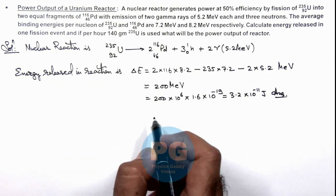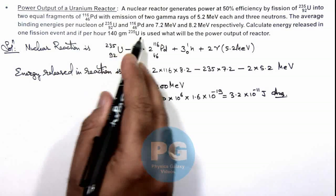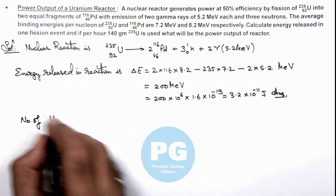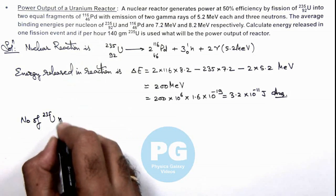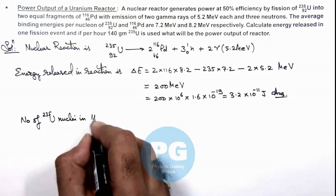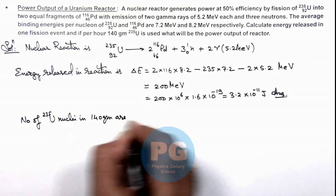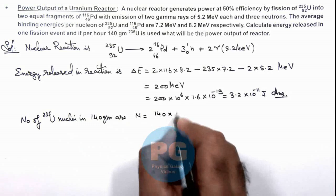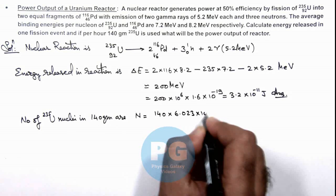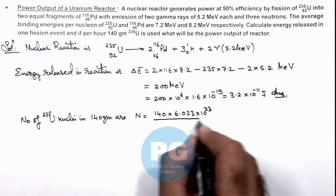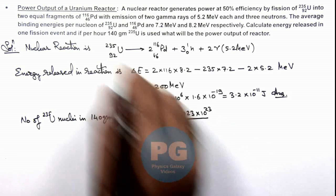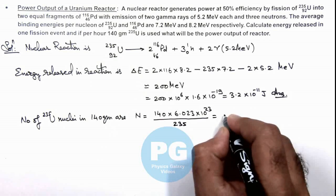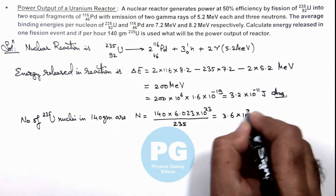So this is the first result of the problem — the energy released in joules for 1 fission event from this reaction. Now, for 140 grams of uranium being used per hour, first we can calculate the number of uranium-235 nuclei in 140 grams. These number of nuclei we can calculate as 140 multiplied by 6.023 into 10 to the power 23 (Avogadro's number), divided by the atomic mass of uranium which is 235. On simplifying, this gives us 3.6 into 10 to the power 23 nuclei.